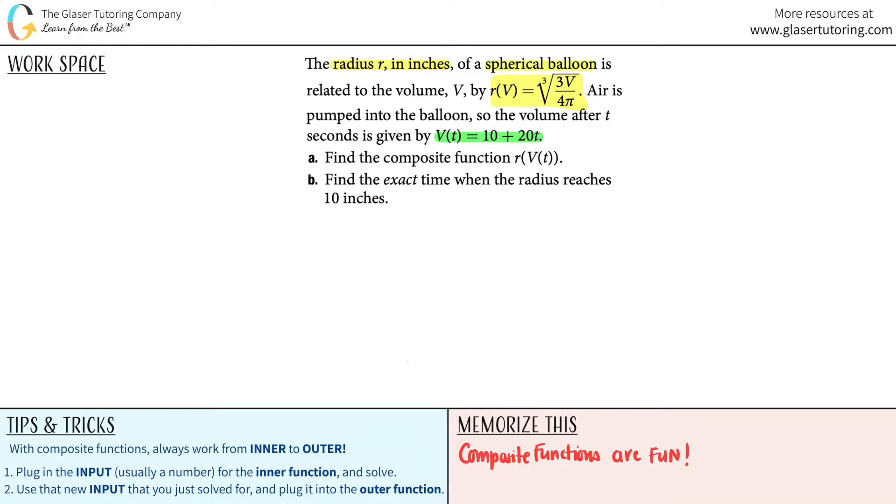Letter A: find the composite function r(V(t)). Okay, so we're going to get down to that exactly. So letter A, all we have to do is find r of V of t.